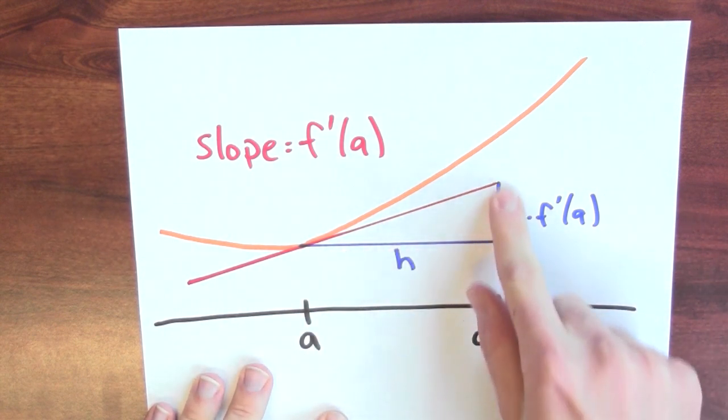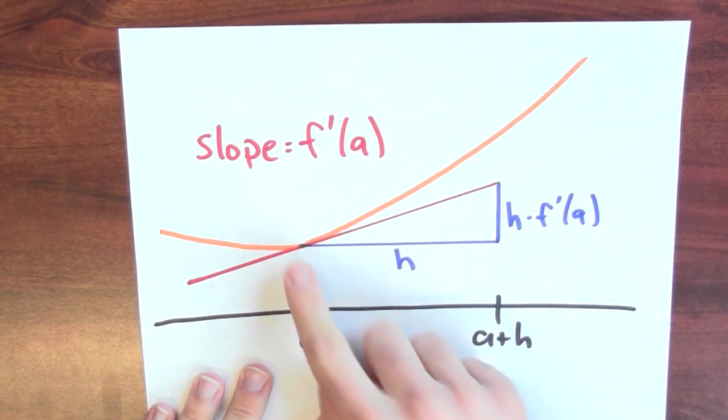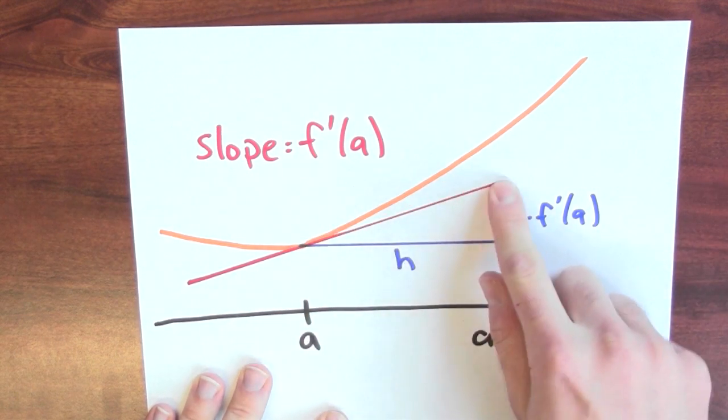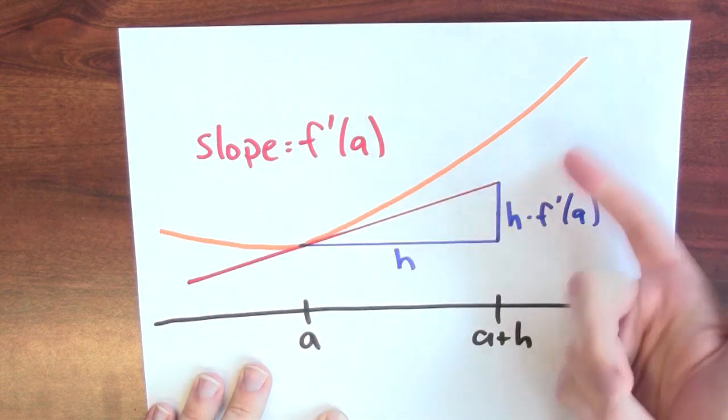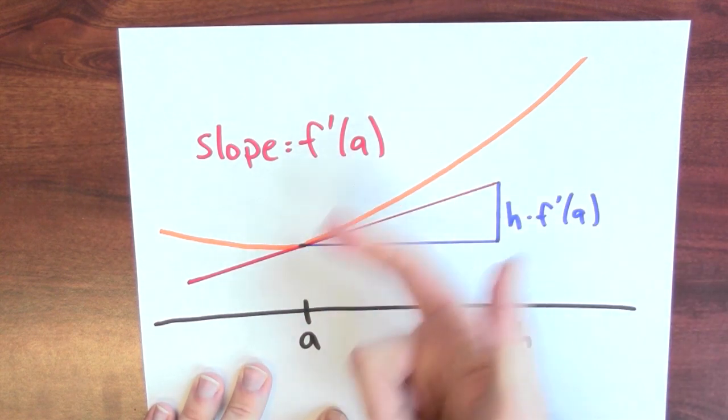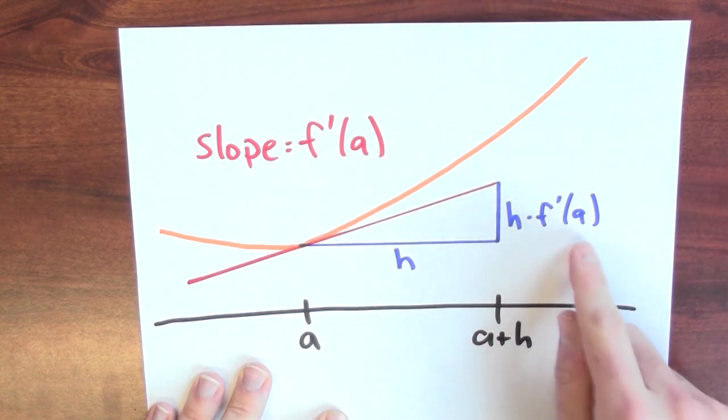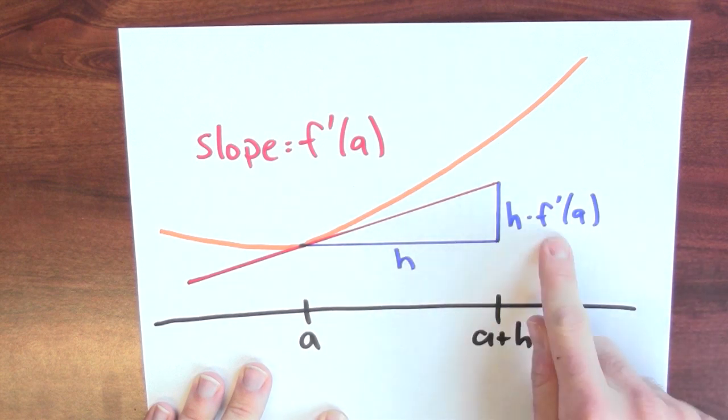That means that this triangle can be understood, right? This slope being f prime of a, this base being h means this height is h times f prime of a. In order to guarantee the slope is f prime of a, rise over run had better be equal to f prime of a. This divided by this is f prime of a.